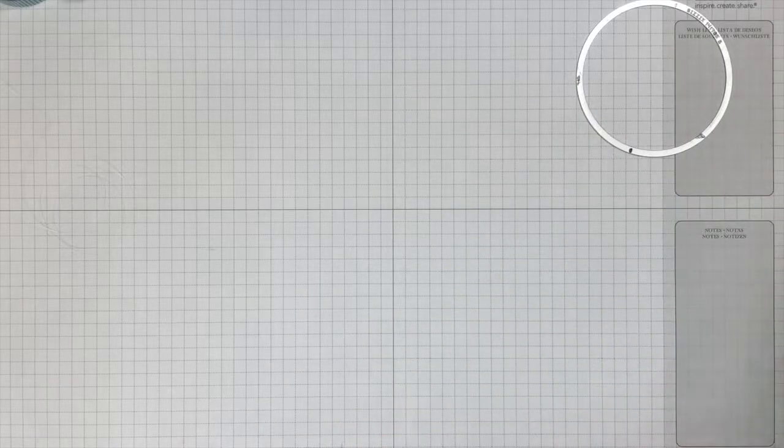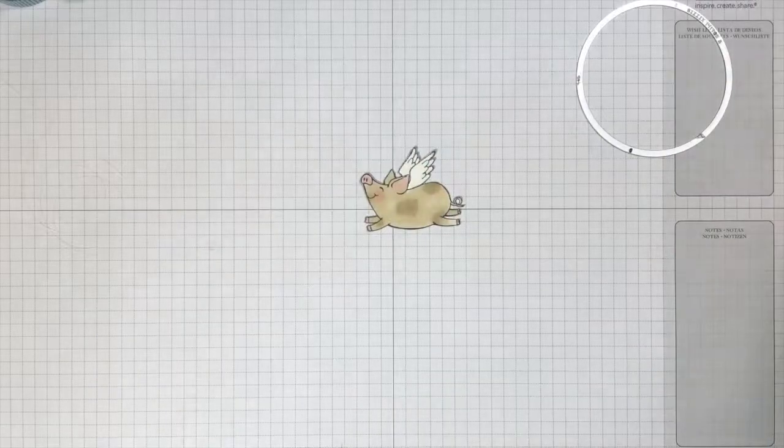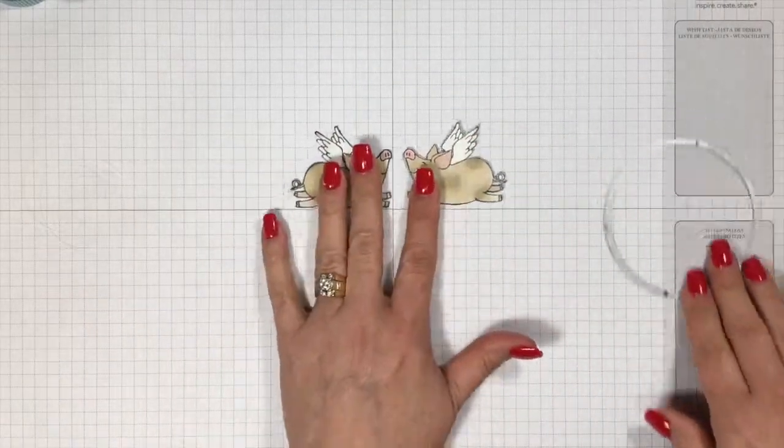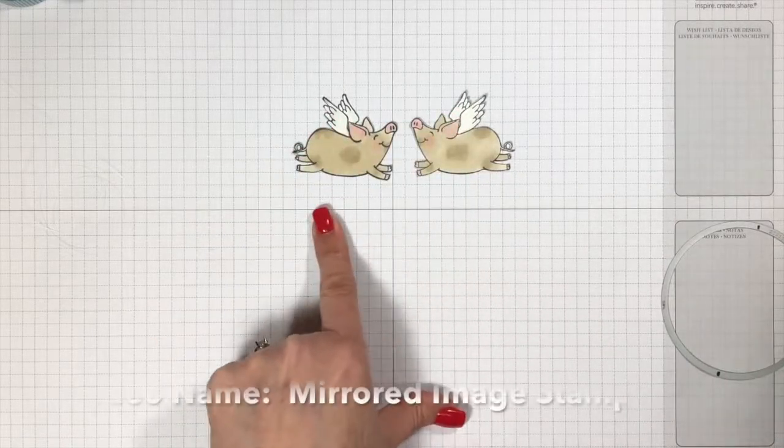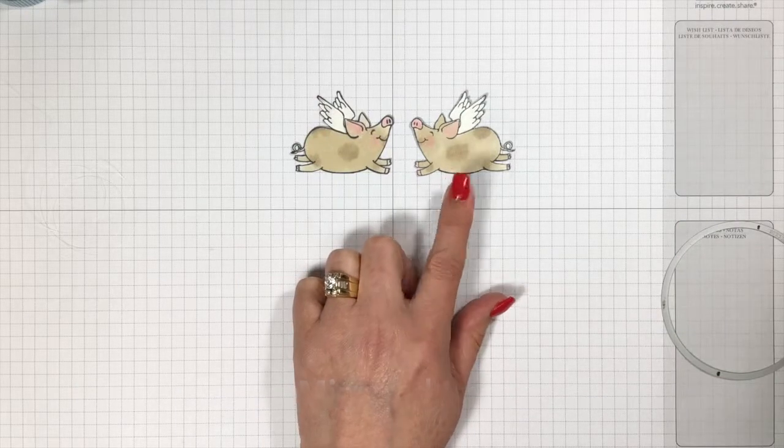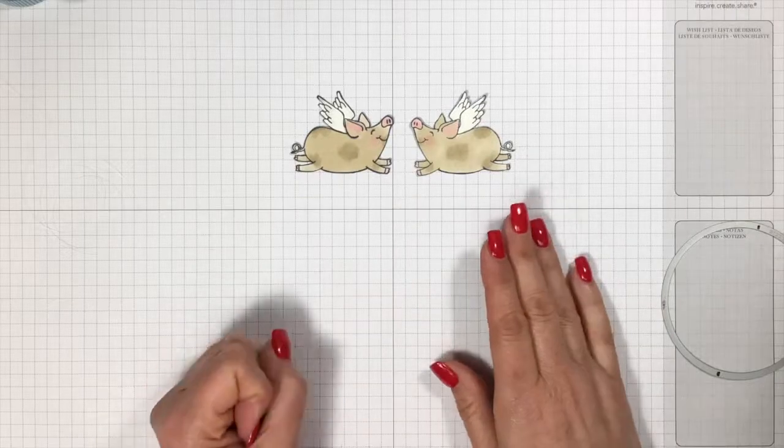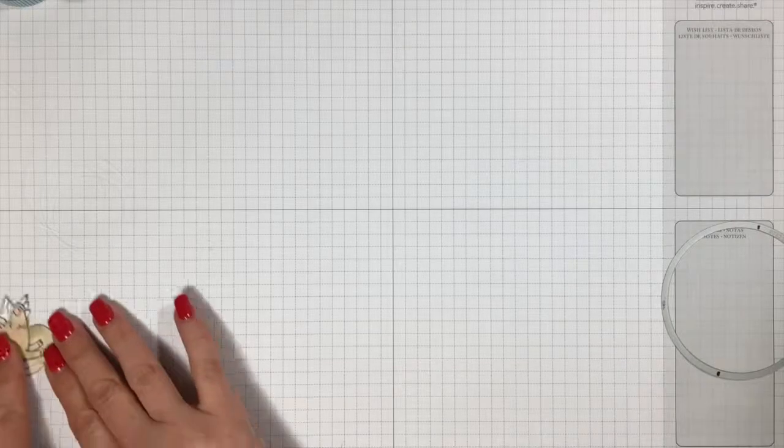First thing you want to do is stamp your image. And so I stamped my pig and I made a reverse image. Now if you don't know how to do a reverse or a mirrored image, I've got a YouTube video on that as well. So go ahead and look at that so you know how to get a mirrored image. And just color them and cut them out and put that aside for now.